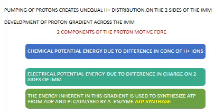The proton motive force has two components. One is the chemical potential energy, which is due to a difference in the concentration of hydrogen ions on the two sides of the inner mitochondrial membrane. The other is an electrical potential energy, due to a difference in charge on the two sides. The energy present in this proton gradient is used to synthesize ATP from ADP and inorganic phosphate, catalyzed by the enzyme ATP synthase.